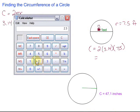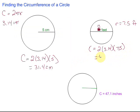2 times 3.14 times 7.5 equals 47.1 inches. Or, excuse me, feet.